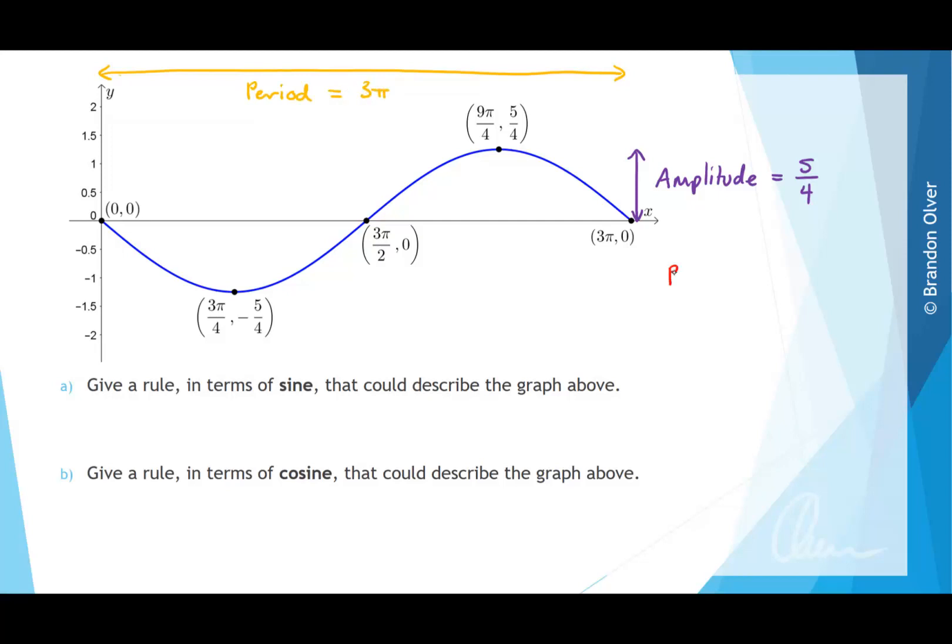In more general terms, the period of any sine or cosine graph is equal to 2 pi divided by n, where n is the value that's multiplied by x in the rule. So we're going to solve 2 pi on n is equal to 3 pi for n.